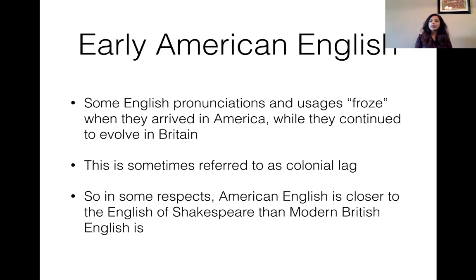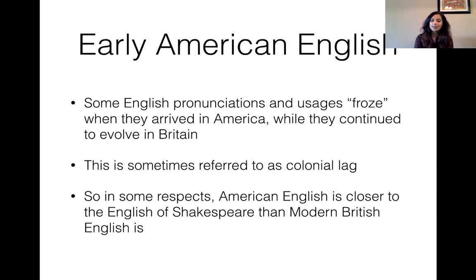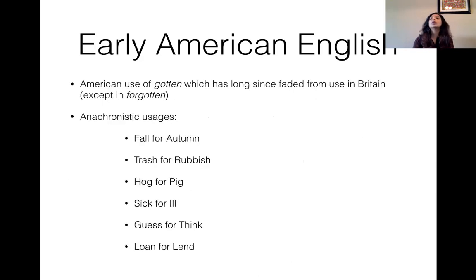What did early American English sound like? People often refer to early American English as 'colonial lag,' where people actually used frozen pronunciations. While those pronunciations changed in Britain, they lagged and stayed the same — they froze in America. In a lot of respects, early American English was closer to the English of Shakespeare than modern British English actually is. Some usages that have faded from Britain but American people still use: 'fall' for autumn, 'trash' for rubbish, 'hog' for pig, 'sick' for ill, 'guess' for thing, and 'loan' for land.